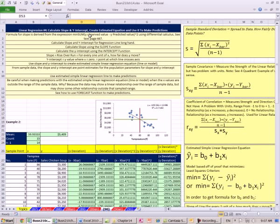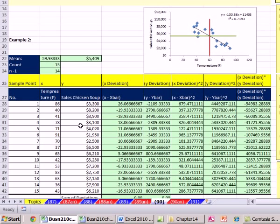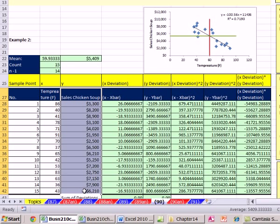We're going to calculate slope and y-intercept for our estimated simple linear regression equation. Last couple of videos, we did some charting and calculated covariance and coefficient of correlation. We've been using this data set for the last few videos. From a grocery store, we had temperatures on given days and the sales of chicken soup. We wanted to see what the relationship was between these variables and make a model that we can use to predict.